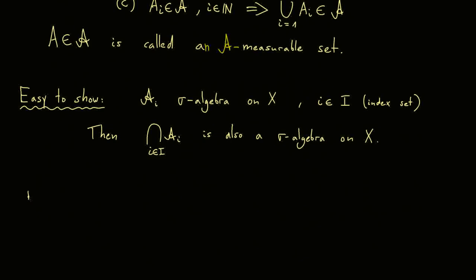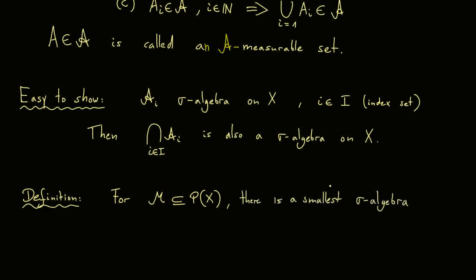This gives rise to the next definition. Let's fix a family of subsets — so we have a subset of the power set of a given set X. In other words, just a collection of some subsets, which means they don't have to form a sigma algebra yet. The result is that we can form a sigma algebra out of this M, and we can choose the smallest sigma algebra — smallest with respect to set inclusion — that contains the set M.